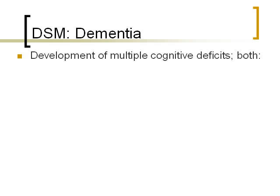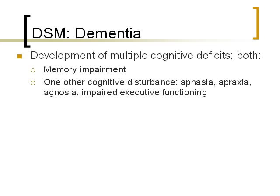Dementia involves the development of multiple cognitive deficits. It has to be two things: one, memory impairment; and two, one other cognitive disturbance beyond memory impairment — which can be aphasia (a general term for language disturbance), apraxia (a motor disturbance where you can't coordinate movements even though your body works), agnosia (the inability to recognize objects you should know), or impaired executive functioning, which is a broad category including problems with planning, sequencing, or using abstract thought.